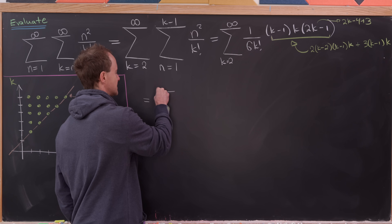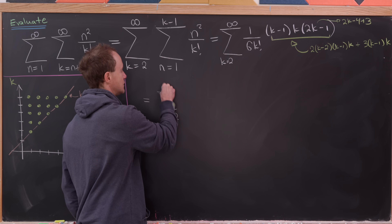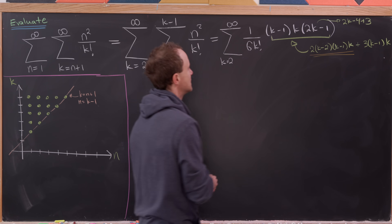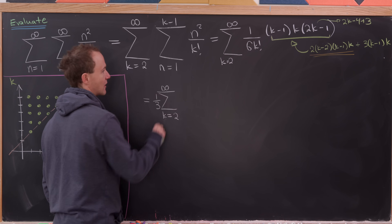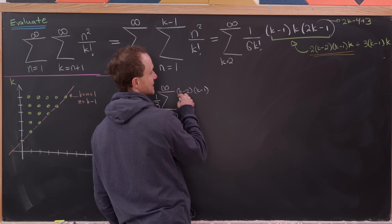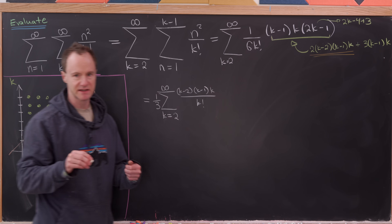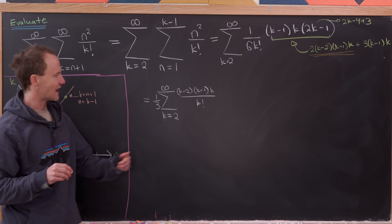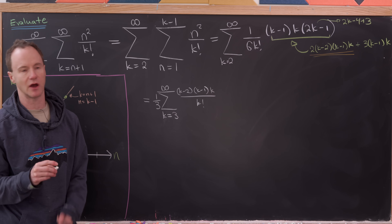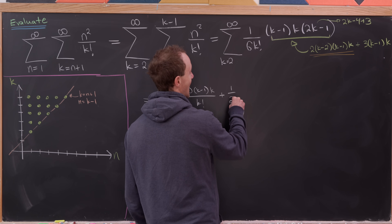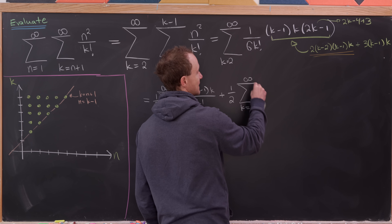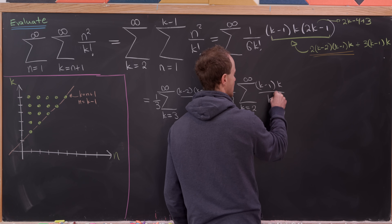Now let's split this into two sums, both as k goes from 2 to infinity. The first sum has 2 over 6, giving a one-third out front, then k minus 2 times k minus 1 times k over k factorial. Notice when k equals 2 we get 0, so we might as well start that sum at k equal to 3. The second sum has 3 over 6, giving a half out front, then k minus 1 times k over k factorial.